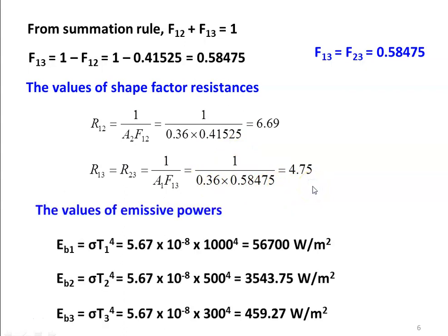Calculating the emissive powers: Eb1 = σ · T1⁴ = 5.67 × 10⁻⁸ × 1000⁴ = 56,700 W/m². Eb2 = σ · T2⁴ = 5.67 × 10⁻⁸ × 500⁴ = 3543.75 W/m². Eb3 = σ · T3⁴ = 5.67 × 10⁻⁸ × 300⁴ = 459.27 W/m².